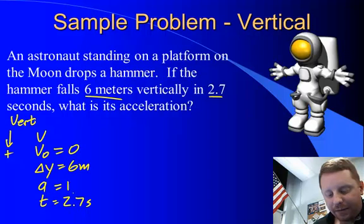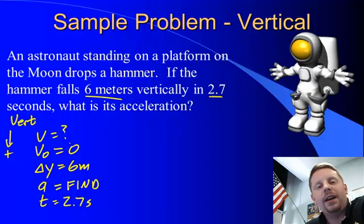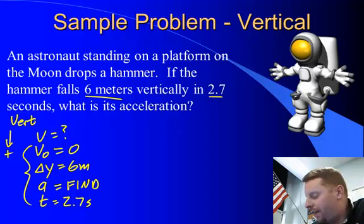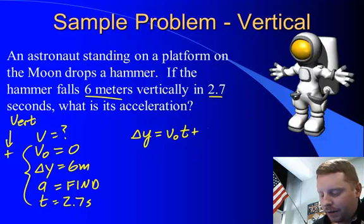We're trying to find acceleration, and we don't know its final velocity. That's alright. We'll pick an equation that has as many of the things we do know as possible. And the one that comes to mind is Δy = v₀t + ½at².